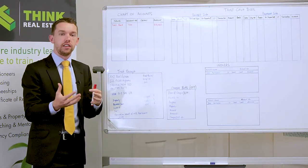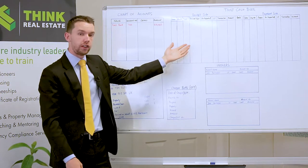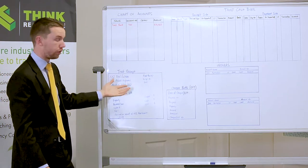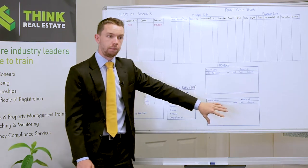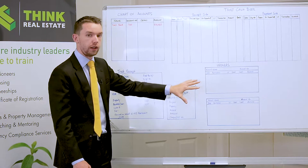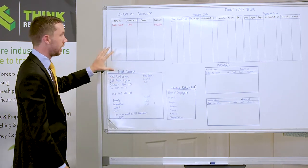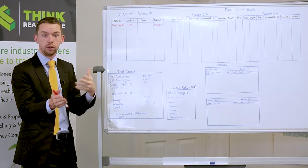Before we start going through each individual receipt or payment throughout the month, we need to set these accounts up. What we have here is a number of different parts of our trust account: the chart of accounts, the cash book itself with a receipt side and a payment side, an example of a trust receipt and a check butt, and ledger cards. First, the information we have needs to be put into our chart of accounts — this is basically a snapshot of who we owe money to within the trust account at any point in time.